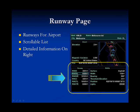The next page is the runway page which gives detailed textual information for the selected runway. On the left-hand side is a scrollable list of all the possible runways for the airport. The pilot has the option of scrolling down through the list to display detailed information on the right-hand side for the selected runway. Runway information includes the runway surface, runway width, bearing, threshold elevation position, and the type of lights on the runway surface.